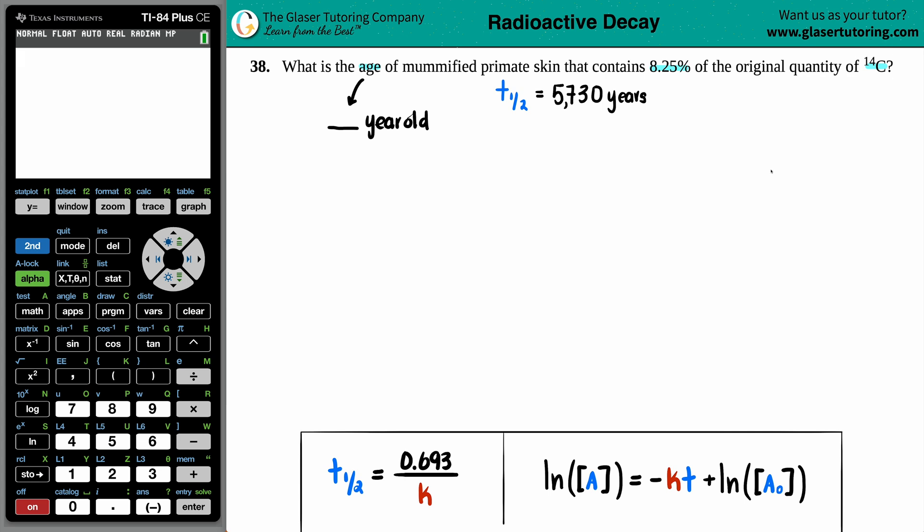Now, carbon-14 decays very slowly. It has a half-life. That's what this T-half means. A T-half is a half-life. So the amount of time it takes to decay to 50% of your original sample, you got to go 5,730 years.